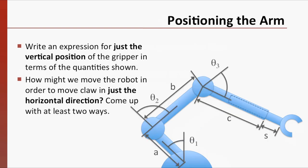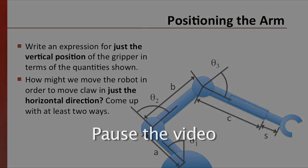Write an expression for just the vertical position of the gripper in terms of the quantities shown. Once you have done that, answer this question. How might we move the gripper in just the horizontal direction? You should come up with at least two ways that we could do this, and describe them mathematically. Your teacher will then lead the class in a discussion of your answers. Pause the video here to do this.